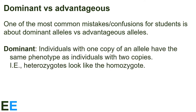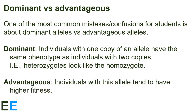The technical term dominant means that individuals with one copy of an allele have the same phenotype as individuals with two copies. In other words, heterozygotes look like the homozygote for the dominant allele. Meanwhile, the term advantageous signifies that individuals with this allele tend to have higher fitness than individuals with other alleles.